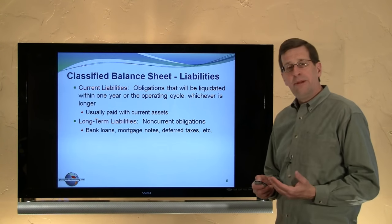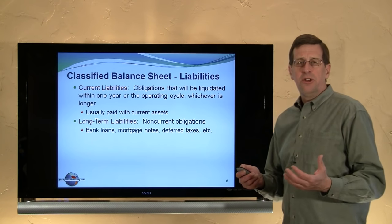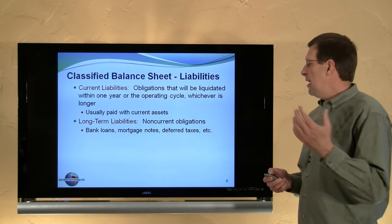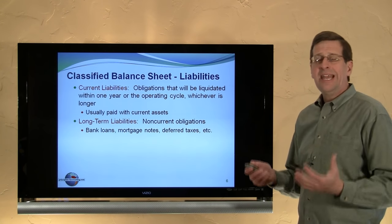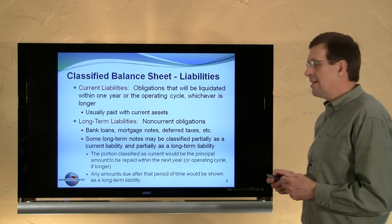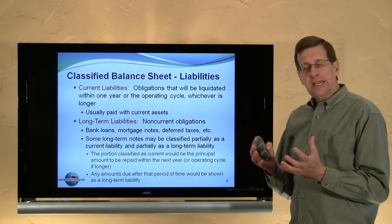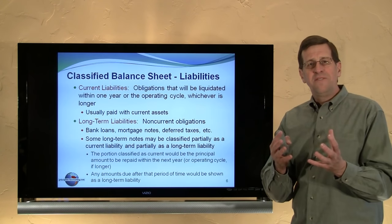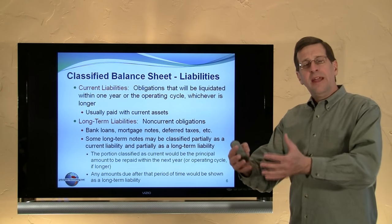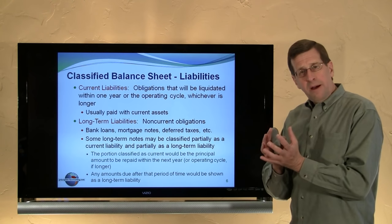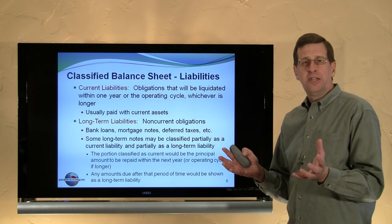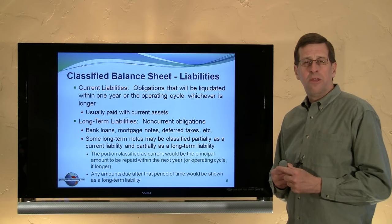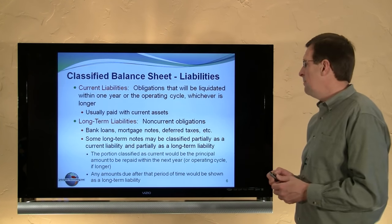Long-term liabilities are obligations that aren't due in the next year. They might include notes payable to a bank on a long-term loan, mortgage notes, deferred taxes, and any number of other categories. Importantly, some liabilities — like a five-year note — may have one-fifth due in the first year and the remaining portion due in subsequent years. Those would need to be separated into two components: the current portion goes in the current liability section and the part due in more than one year goes in the non-current liability section.